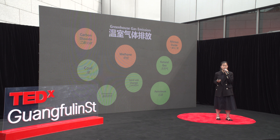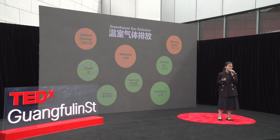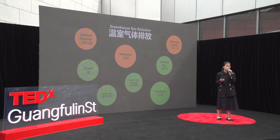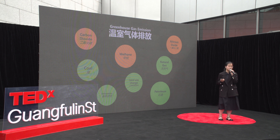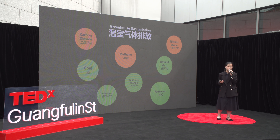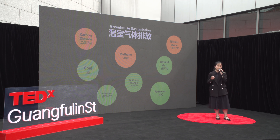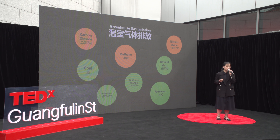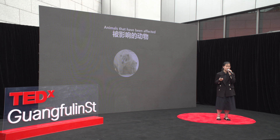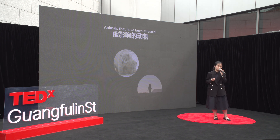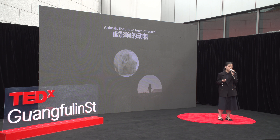According to NASA, human activity has caused Earth's temperature to rise by one degree Celsius over the past century. While that may not seem like much, it is having a significant impact on the planet. One of the most significant impacts of global warming is the melting of the ice caps. The melting of the polar ice caps is leading to a rise in flooding in low-lying areas, affecting millions of people worldwide. The melting of the ice caps also causes the loss of habitat for many species of animals, including polar bears and penguins, as most of us know.